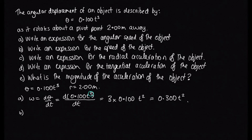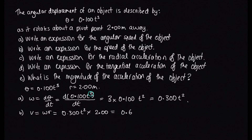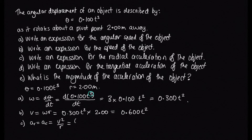Part B asks for an expression for the speed. Using v = ωr, and substituting ω = 0.300t² from Part A and r = 2 metres, we get v = 0.300t² × 2 = 0.600t². Part C asks for the radial acceleration, which equals v²/r. Substituting v = 0.600t² and r = 2, we get (0.600t²)²/2 = 0.180t⁴.